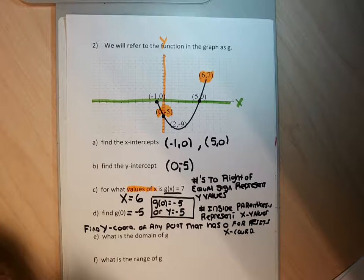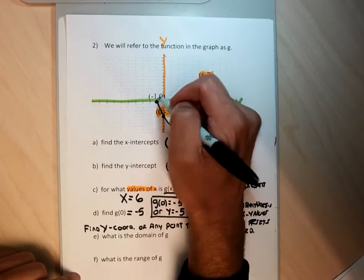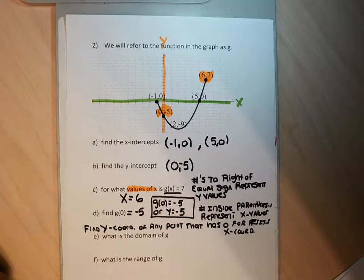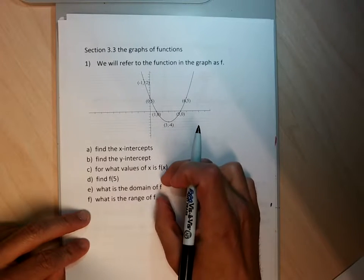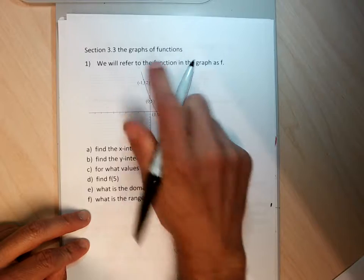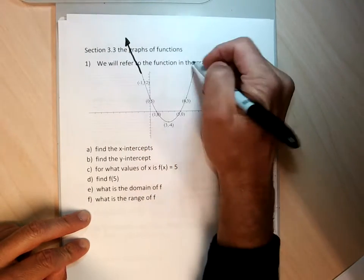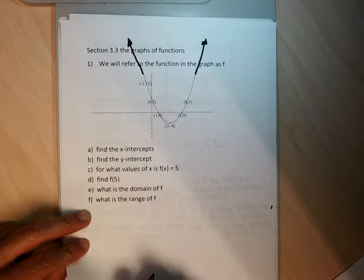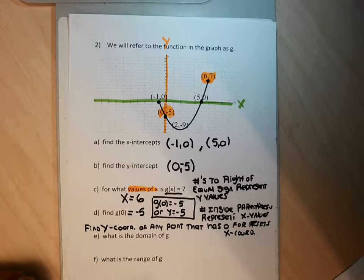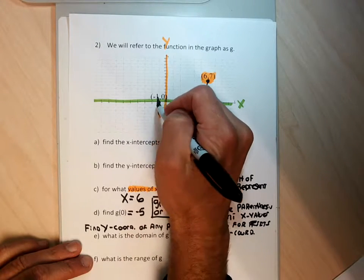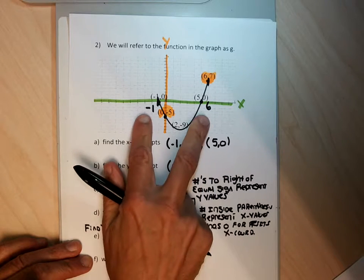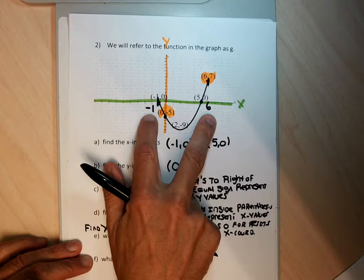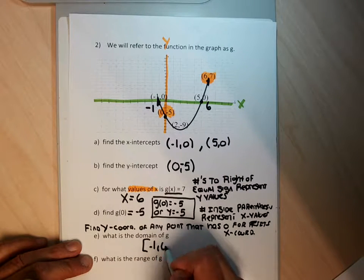Parts E and F are a little bit different between my graph and your graph, because on my graph the endpoints are marked. When the endpoints are marked, you don't extend the graph to find the domain and range. For your problem 1, when you get to parts D and E, the edges of the graphs aren't marked, so you'll have to extend the graph up and to the left and up and to the right. For me, I isolate the left and right edge for the domain and the bottom and top for the range. This graph's left edge starts at x equal negative 1 and its right edge ends at x equal to 6, so the domain is negative 1 to 6.